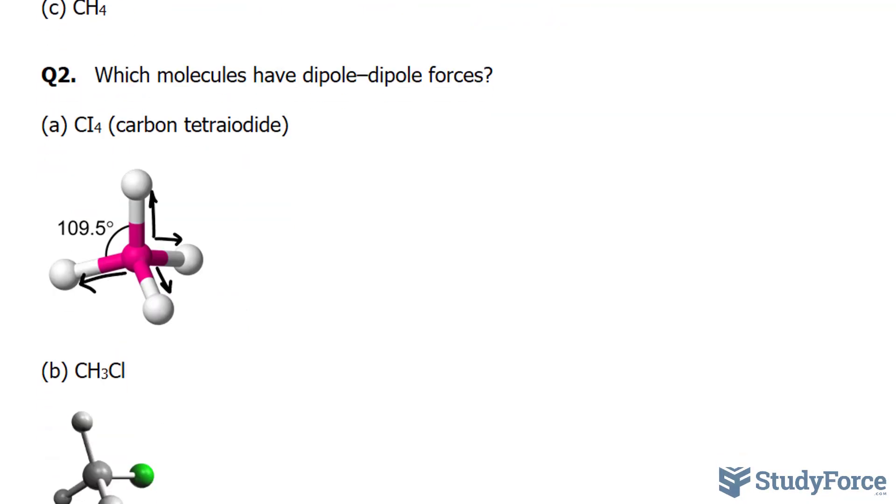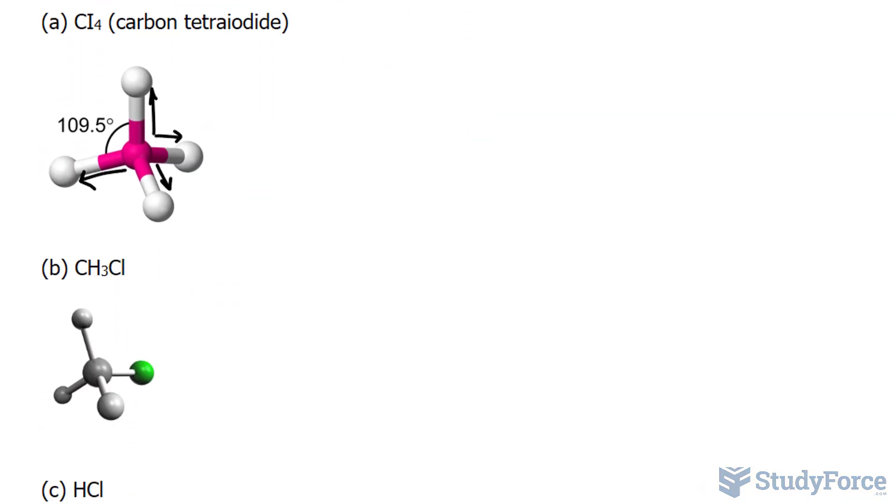Let's move on to part B. Here we have CH3Cl. We have a central carbon atom, and these are hydrogens. Hydrogen is less electronegative than carbon.